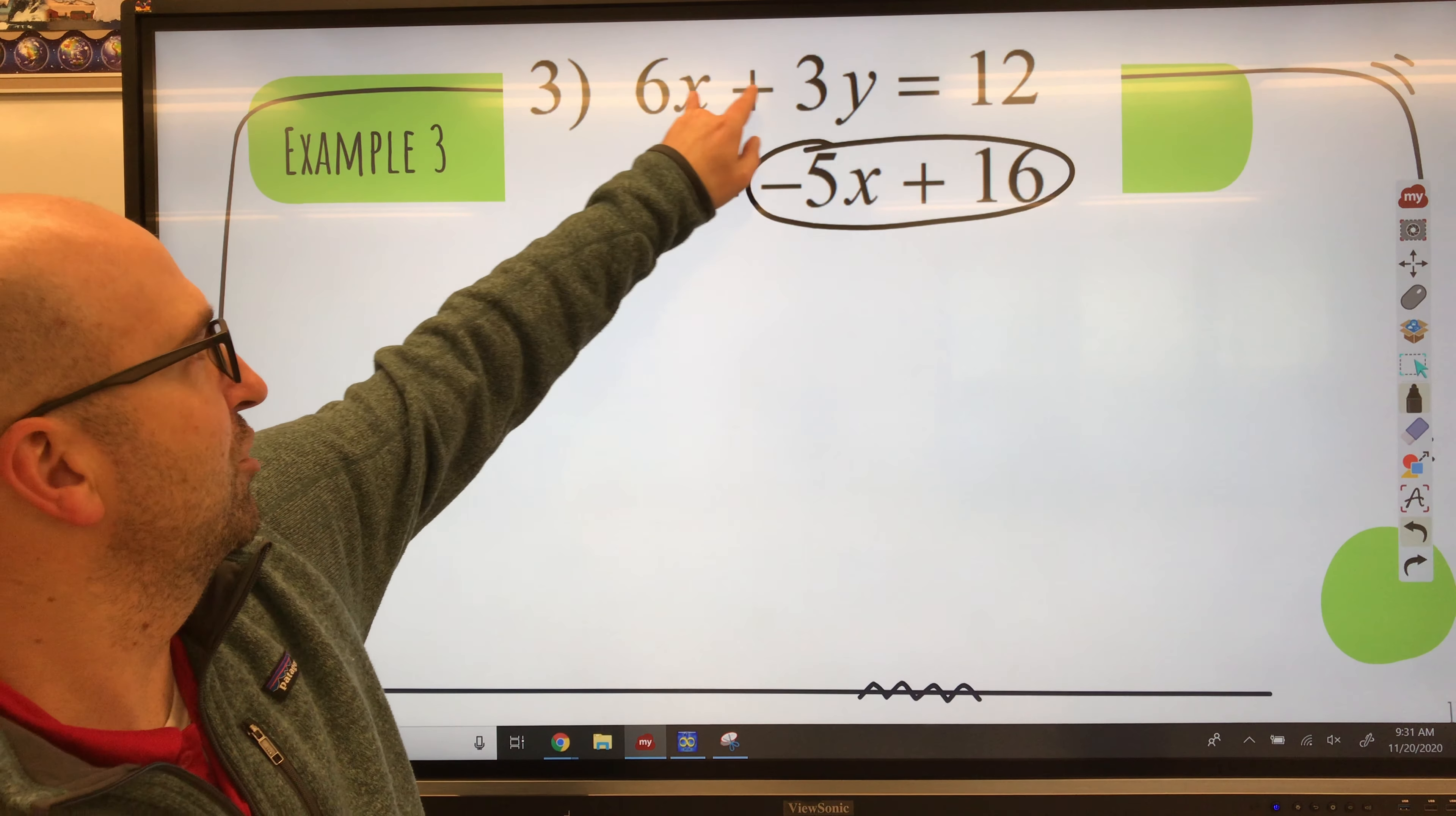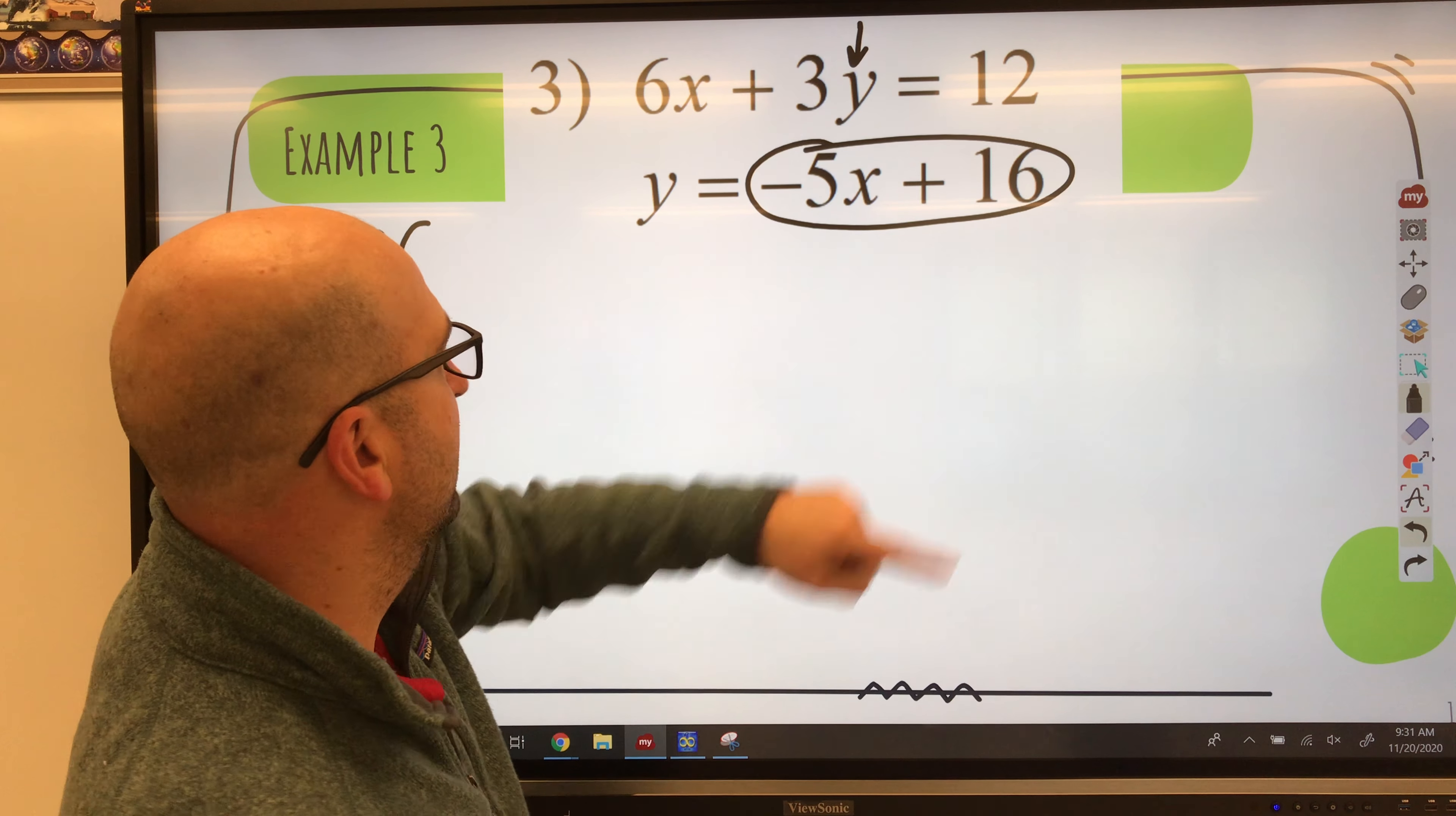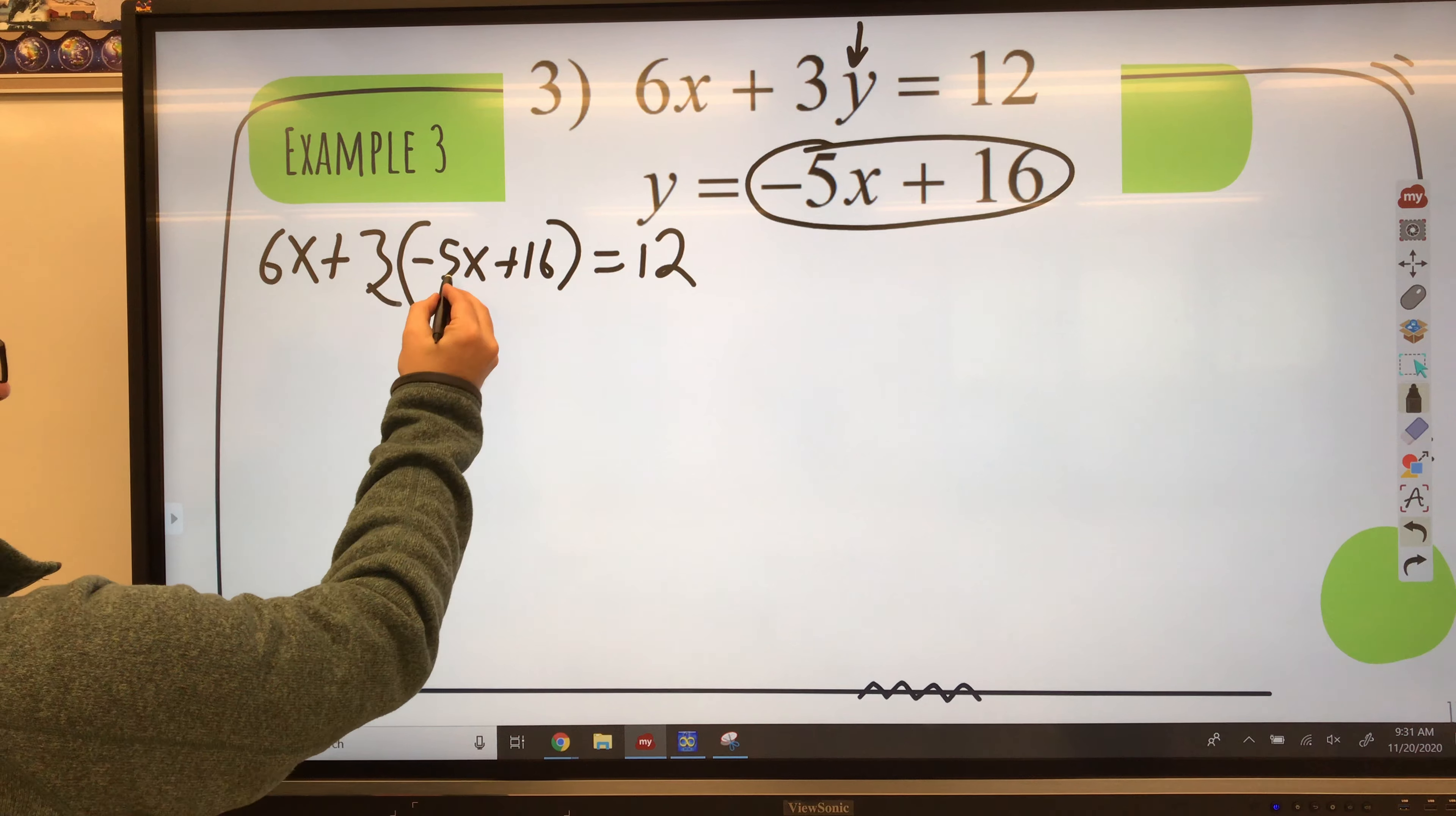And we're going to substitute that in for y right here in the other equation. So we have 6x plus 3 times, not y, negative 5x plus 16. Negative 5x plus 16 equals 12. Now I've got to distribute.